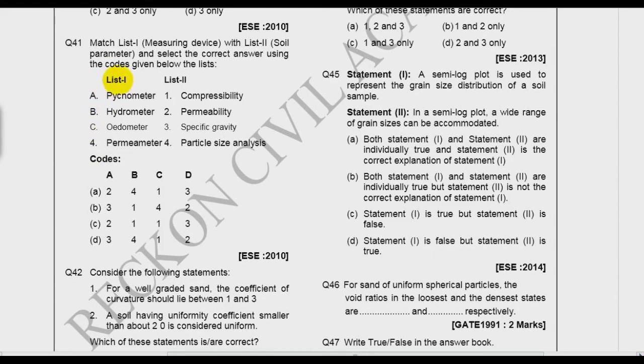Now let's come to question number 41. We have to match the following. So pycnometer is used for specific gravity and water content. Here it is only given about specific gravity. So third is the answer. Hydrometer is used for particle size distribution below 75 micron. So this is fourth option. Odometer is used for the consolidation test. So this is compressibility. And permeameter is for permeability. So it is a little bit simple question. What is my option now? A3, so this and this may be right. Then B4. So in first two only you can get the answer D.